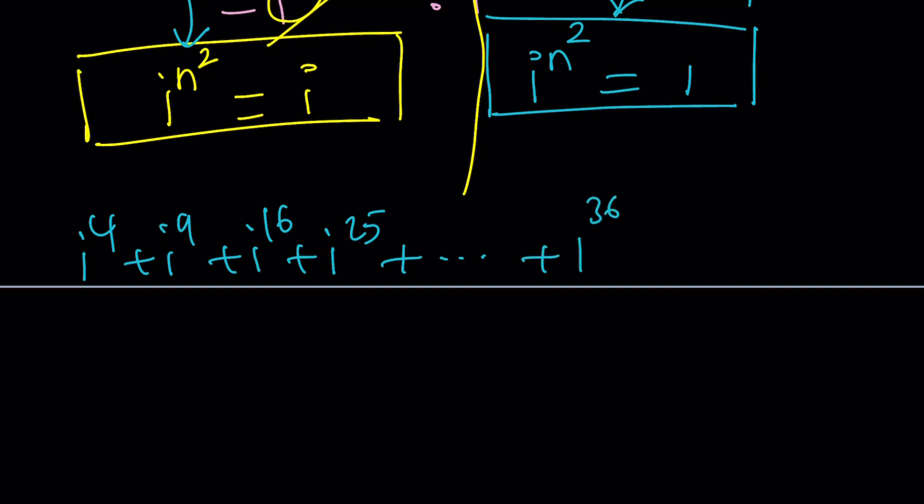And then maybe i to the power 361, which is 19 squared, by the way. And this is 400 is the last term, right? So take a look.